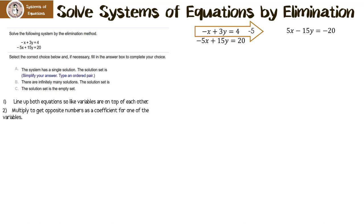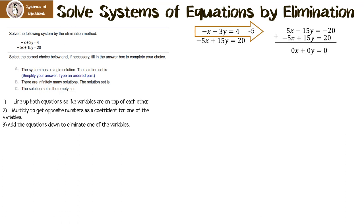Negative 5 times negative x is positive 5x, negative 5 times 3y is negative 15y, and negative 5 times 4 is negative 20. The second equation I leave alone. Now we add straight down: 5x minus 5x is 0x. Then we have negative 15y plus 15y, that's 0y, and negative 20 plus 20 is 0. That really means 0 equals 0. Will 0 ever equal 0? Yeah, every single time.